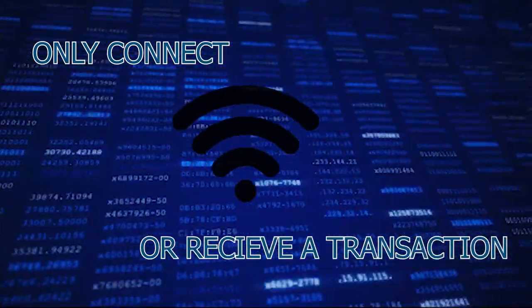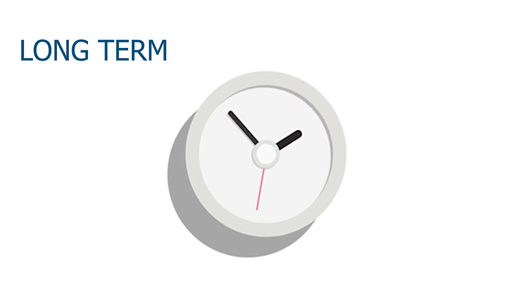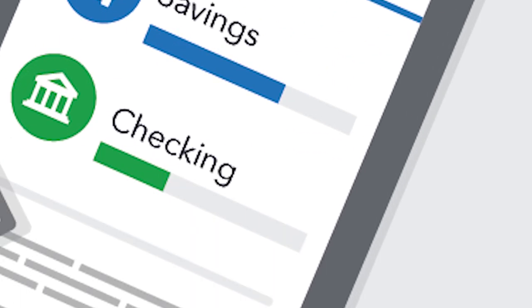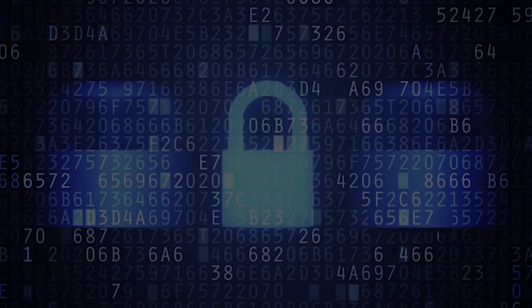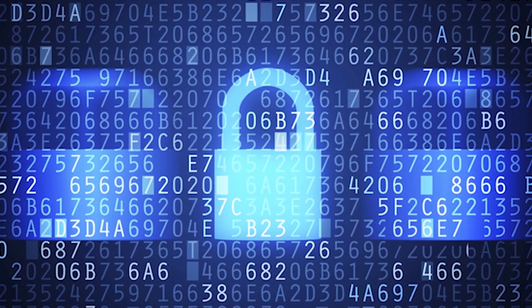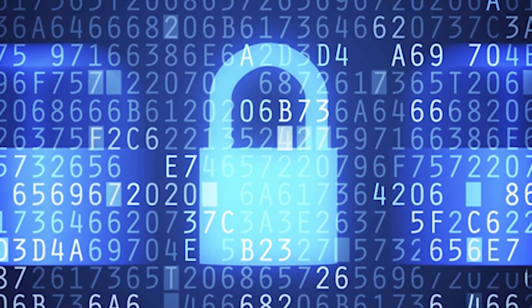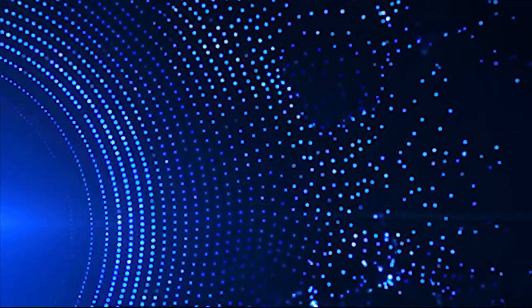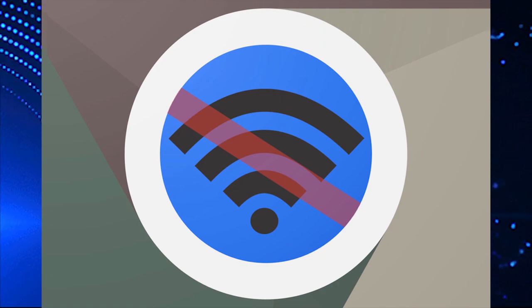The hardware wallet works by only connecting to the internet when you want to make or receive a transaction. It's made for storing your cryptocurrency long term — more like a savings account than a checking account, since you don't want to be accessing it constantly. This does not mean hardware wallets are unhackable, but they provide a security advantage because they are only online during transactions and otherwise remain offline, making it much harder for hackers to reach them.